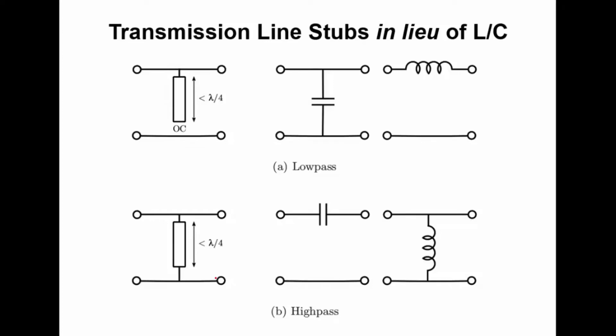Now we switch gears to distributed filter structures, and the simplest distributed filter structures I can think of are just transmission line stubs, which you've now encountered several times in your undergraduate career. Let me show you the two canonical transmission line stubs that are used as filters.